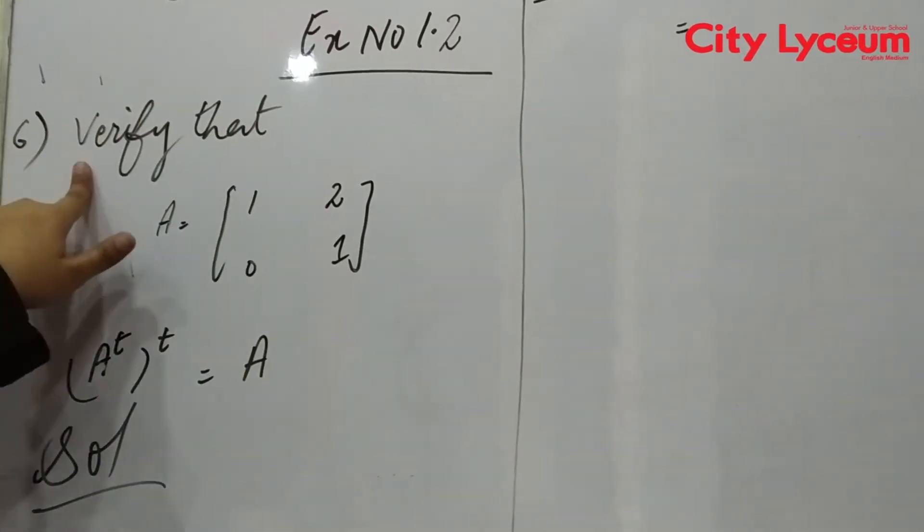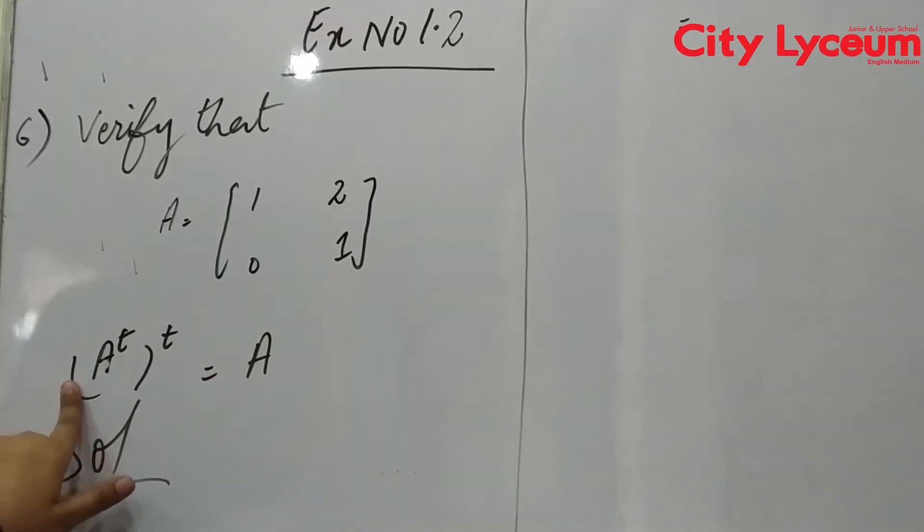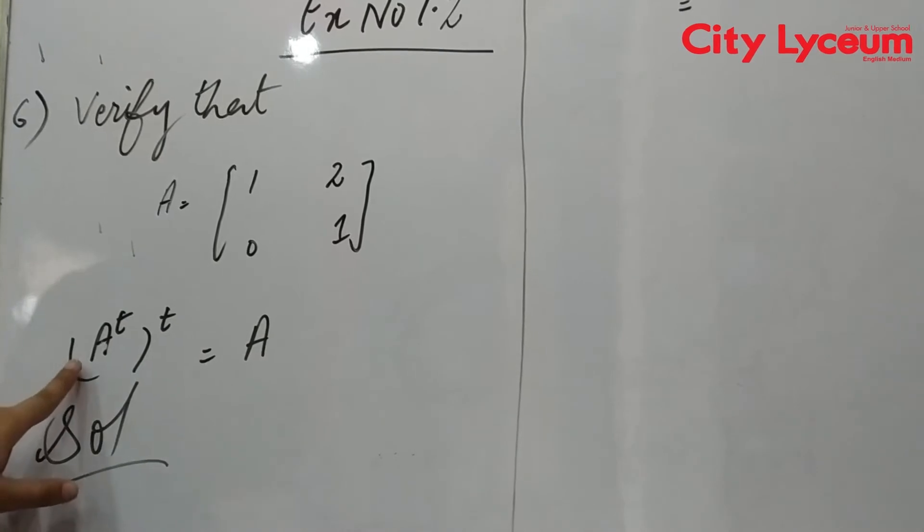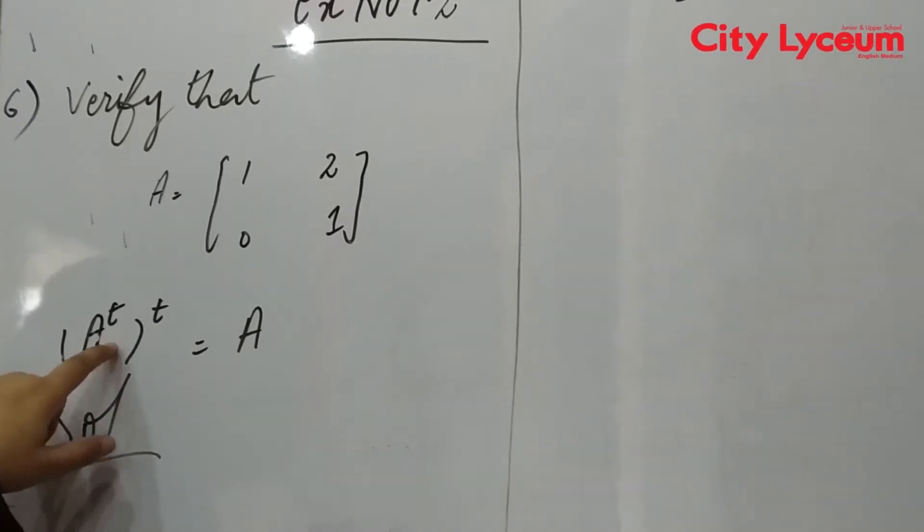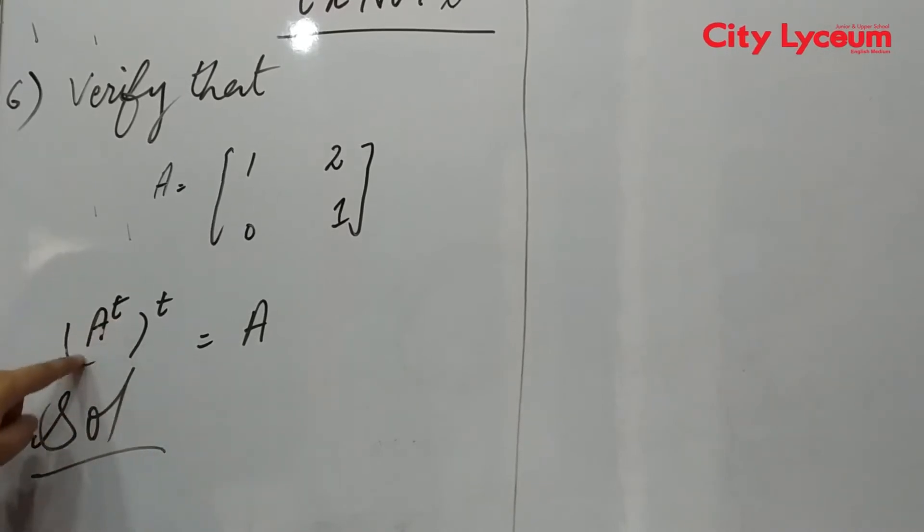Verify that A equals [1 0; 2 1] and (A^t)^t = A. We have left hand side and right hand side. If you can see left hand side, this is A transpose bracket transpose.